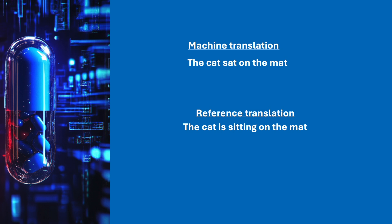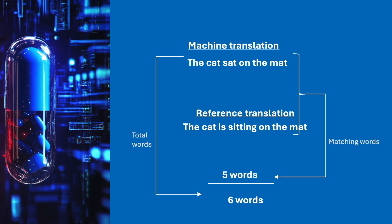Now we can compare the machine generated translation and the reference translation. Here the total number of words in the machine generated translation is 6, and the number of words which are common between the machine generated translation and the reference translation is 5. So the BLEU score is 5 by 6, which is 83%. The BLEU score objectively measures the accuracy of translation, with a score of 0 meaning a bad translation and a score of 1 meaning a perfect translation.